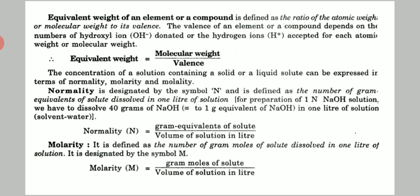From the definition, equivalent weight is defined as the ratio of atomic weight or molecular weight of the component to its valency. The valency of an element or compound depends on the number of hydroxyl ions donated or hydrogen ions accepted per atomic weight or molecular weight. We will take one or two examples to understand how to calculate equivalent weight and what the valency of the compound is.